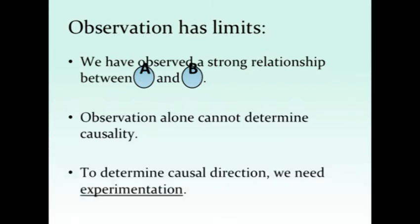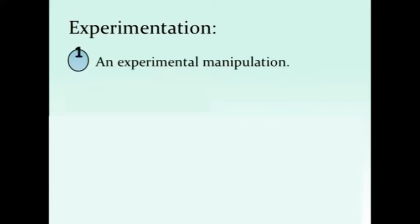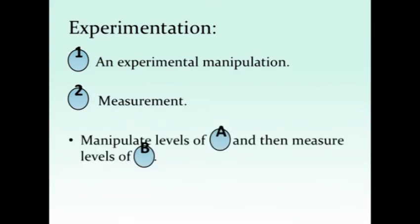To determine a causal direction, what we need is experimentation. In order to do experimentation, you need at least two steps. The first is an experimental manipulation — you have to do something to the participants, give something to them, change their situation in some way. The second thing is measurement: at some point, you check for your dependent variable, your B variable, after having altered your A variable. To put it simply, you manipulate your levels of A and then you measure your subsequent levels of B.